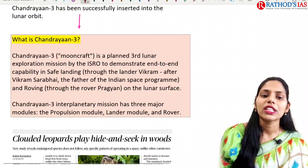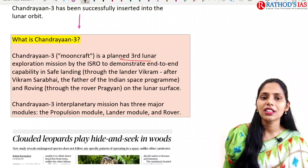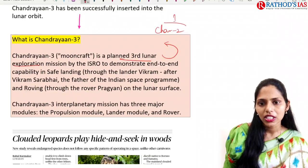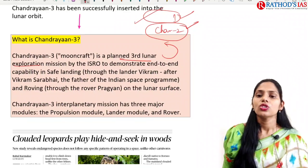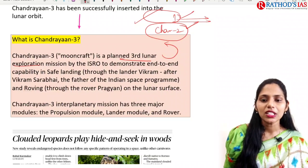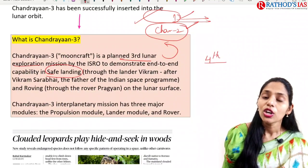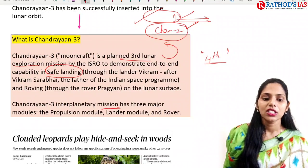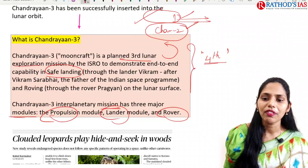Chandrayaan-3 is also called as moon craft. It is a planned third lunar exploration. Before Chandrayaan-3, we had Chandrayaan-2, which was a failed mission, but Chandrayaan-1 was a success and gave important details about the moon. Chandrayaan-3 has the capability of soft landing — if successful, India will be the fourth country to have this technology of soft landing on the moon's surface. Chandrayaan-3 is an interplanetary mission which has three major modules: the propulsion module, the lander, and the rover.